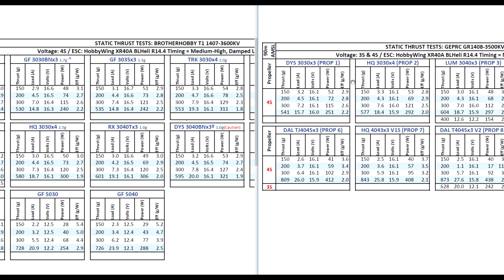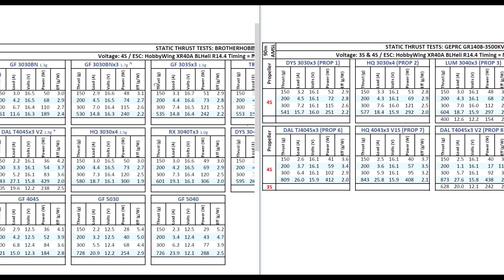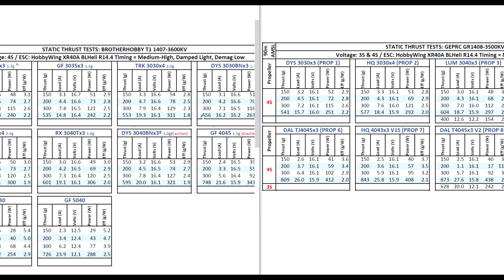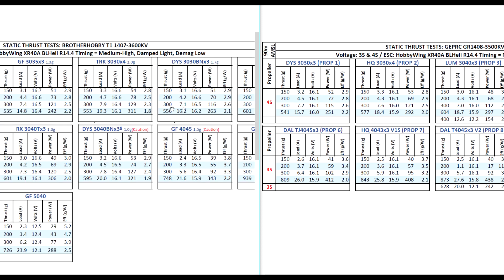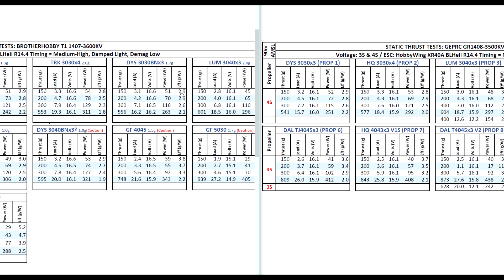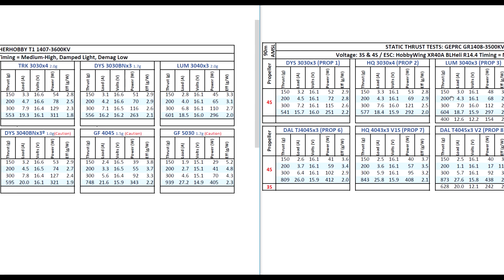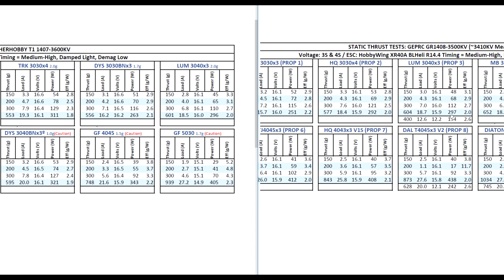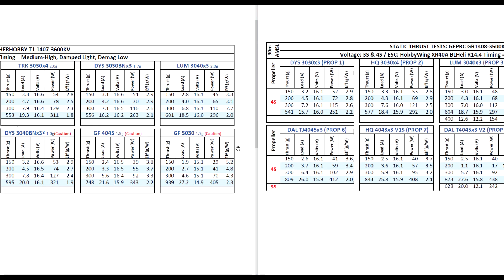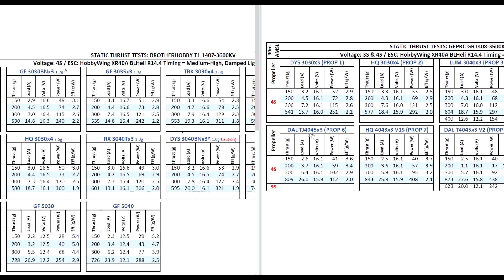But as we can see on the smaller 3 inch props, we can definitely see the Brother Hobby is a little bit better. It's doing just slightly ever slightly better because of the advantage on the KV. Here we see 556 on the 3030x3. Then let's look at the Lumenier 3040x4 - that's another prop that shows a motor's performance. And here we see they're actually neck and neck, they're practically identical at 600 and 18.8 and a half basically amps.